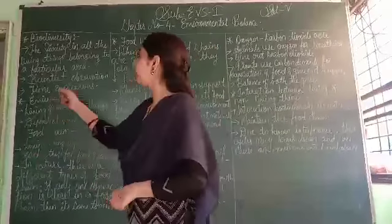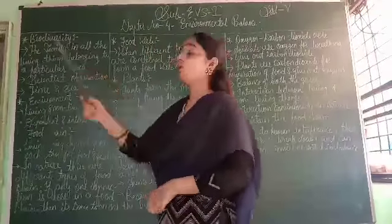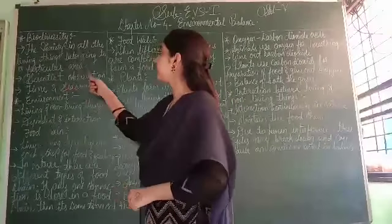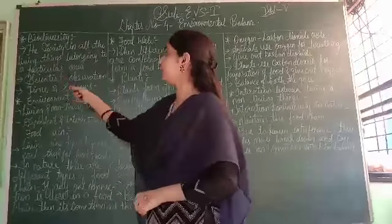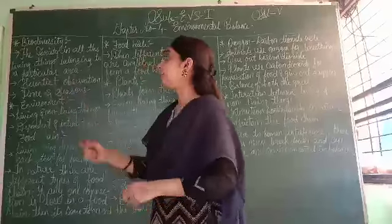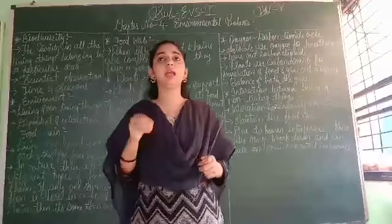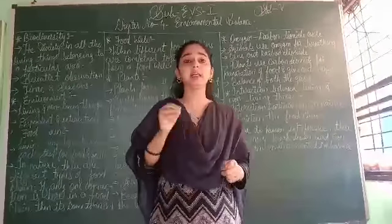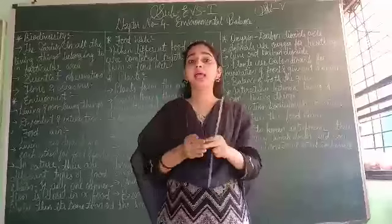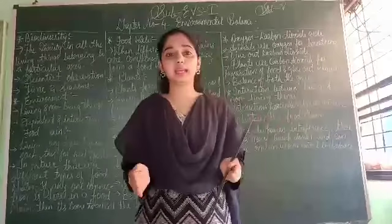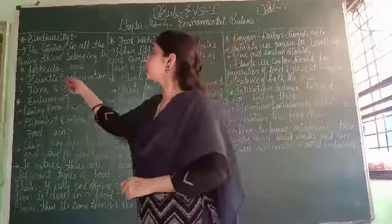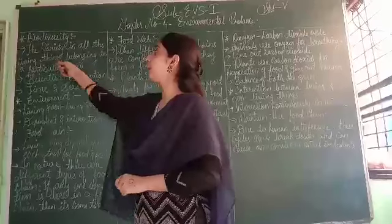Let us start with the point biodiversity. What is biodiversity? It is the variety in all the living things belonging to a particular area. We are living in an environment and we have many different kinds of things in it. These variations in the environment are known as biodiversity.